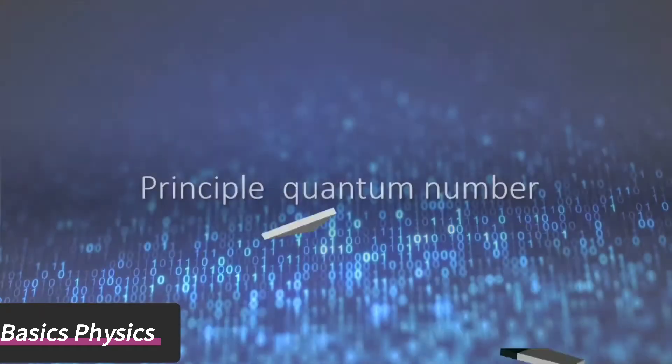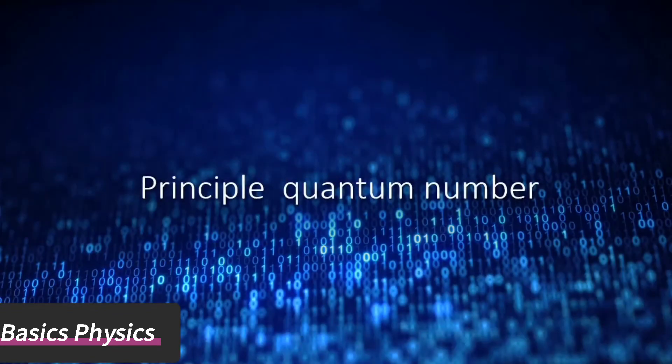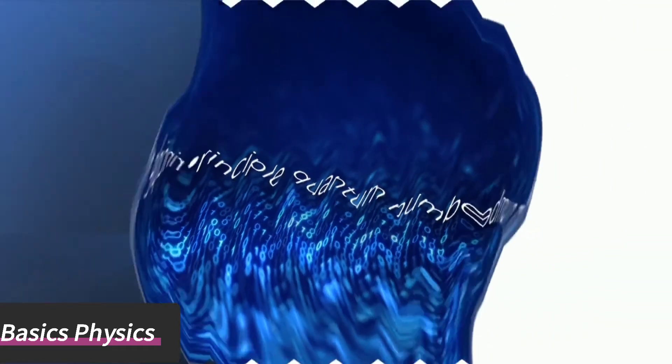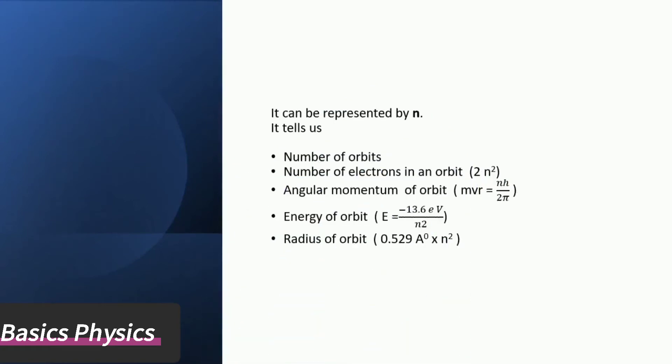Principal quantum number can be represented by n. It tells us the number of orbits, number of electrons in an orbit with formula 2n², angular momentum of orbit, energy of orbit, and radius of orbit.